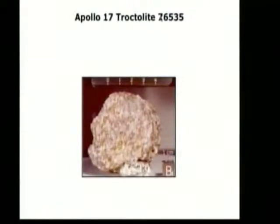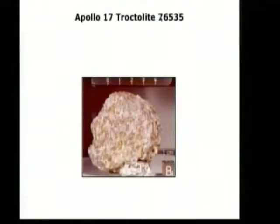One famous rock we've been studying is Apollo 17 sample 76535 — some people call it the prettiest lunar rock. It's very coarse-grained with big jewel-like crystals of plagioclase and olivine, several millimeters to a centimeter in size. It's a sample from tens of kilometers deep in the lunar crust, ejected by a gigantic impact 4.2 billion years ago. This rock is older than any rock we have from the Earth, and somehow survived the incredibly violent early period of lunar history without being affected by high pressure or deformation.